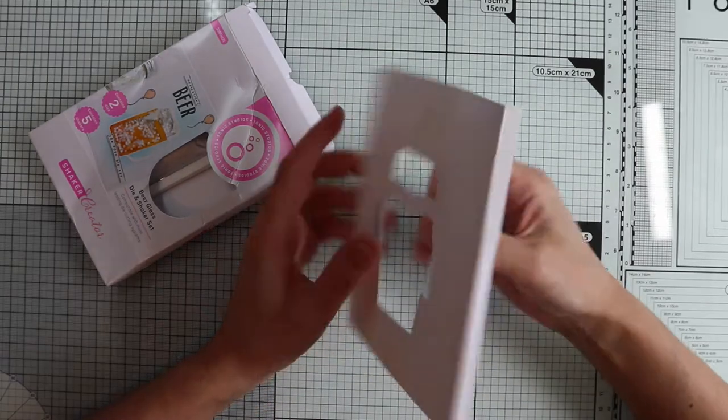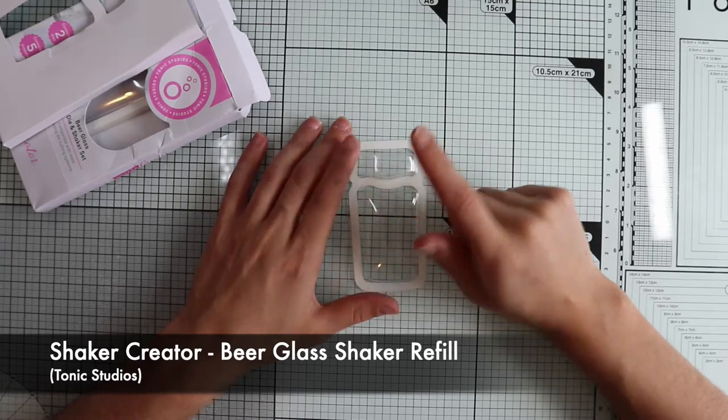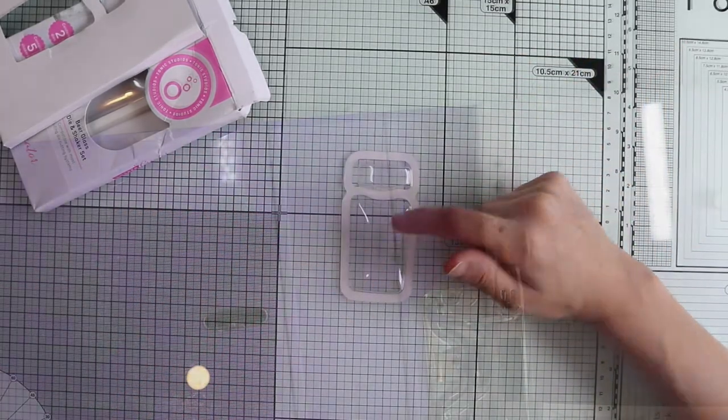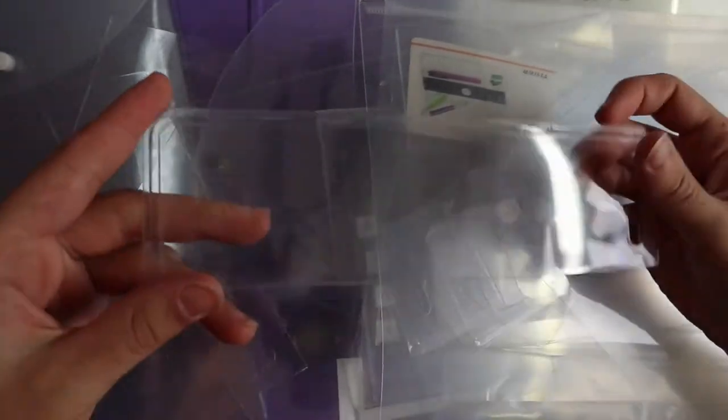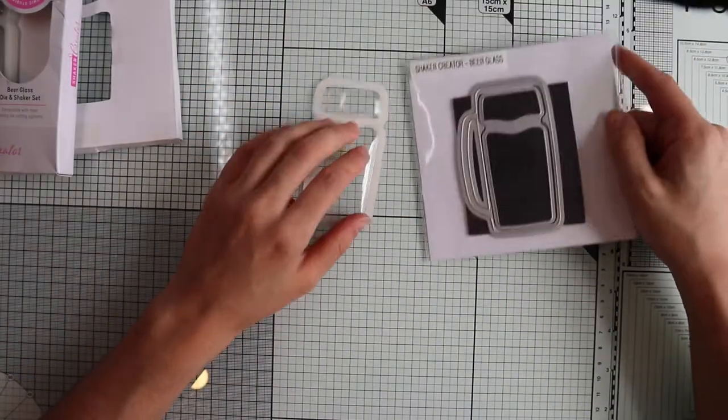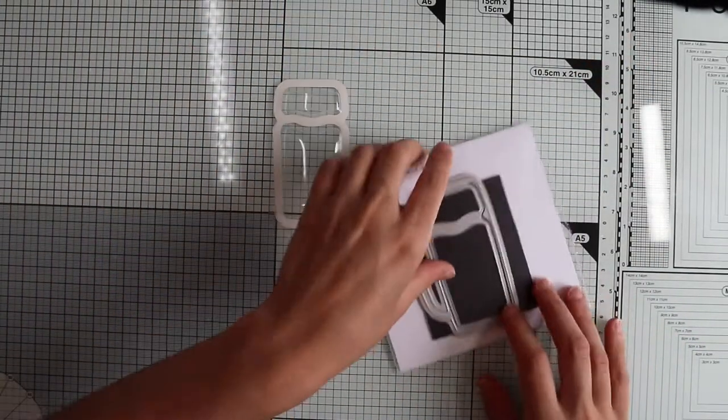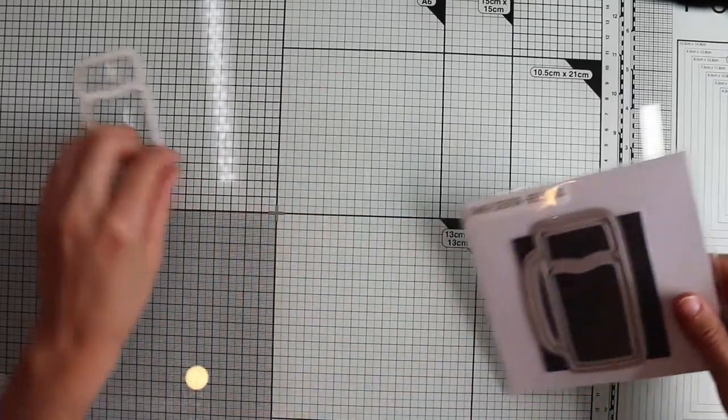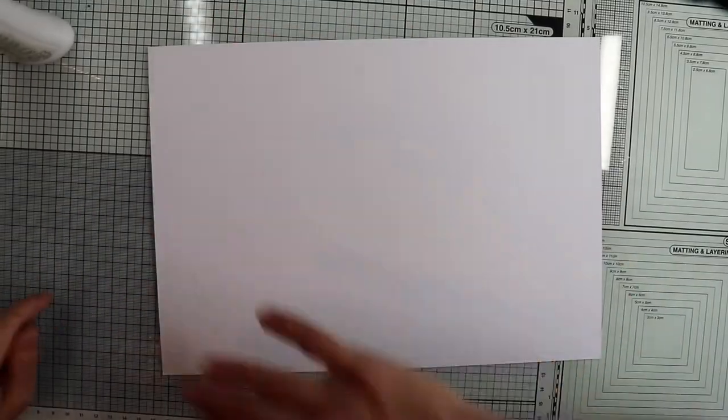Let's make our premise first. I will use the blisters included in the die set, but obviously you can use a normal acetate sheet, perhaps recycled from the packaging. Also, if you don't have this die, you can use whatever you have and follow the general style. I invite you to be free to use all your creativity. So, let's get started!